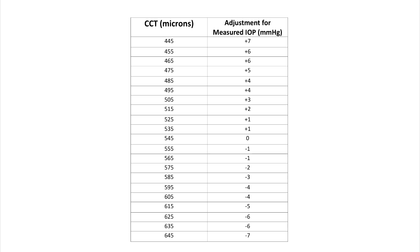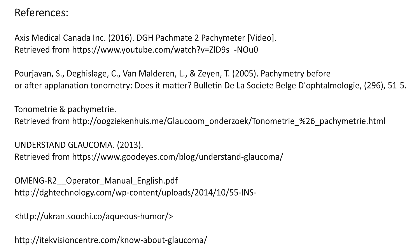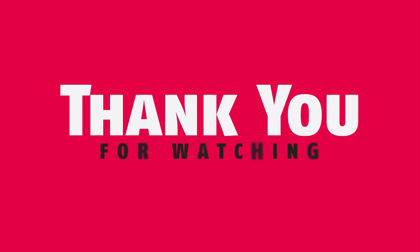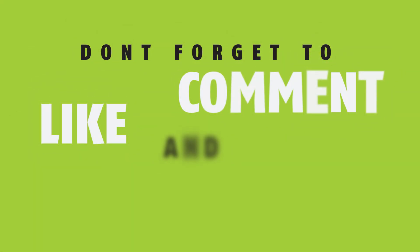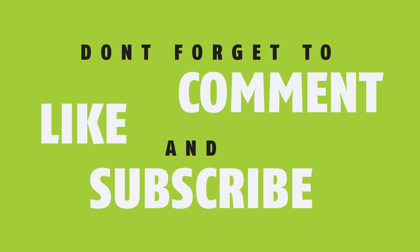However, corneal thickness cannot be implicated as a risk factor for glaucoma independently. In summary, clinical assessments with an orthoptist or ophthalmologist should include a measure of the patient's corneal thickness along with their IOP. This is due to the fact that IOP may be overestimated or underestimated depending on the patient's corneal thickness, which may lead to incorrect diagnosis of eye disorders based on incomplete clinical investigations. Thank you for watching and we hope you found this video useful.